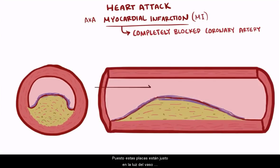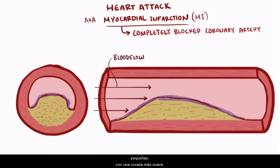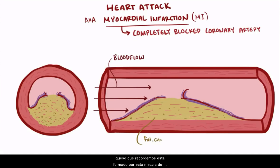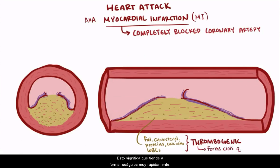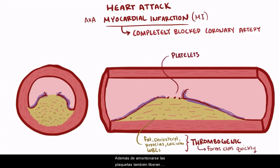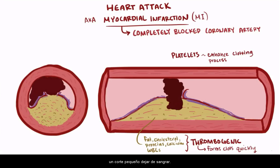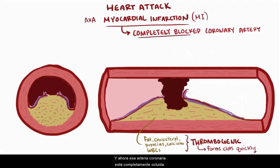Since these plaques sit right in the lumen of the blood vessel, they're constantly being stressed by mechanical forces from blood flow. Interestingly, it's often the smaller plaques with softer caps rather than the larger ones with harder caps that are especially prone to break or get ripped off. Once that happens, the inner cheesy filling — a mix of fat, cholesterol, proteins, calcium, and white blood cells — is thrombogenic, meaning it tends to form clots very quickly. So platelets, or blood clotting components in the blood, flow by and adhere to this exposed material, also releasing chemicals that enhance the clotting process. This happens super fast — think about how quickly a small cut stops bleeding — and now that coronary artery is fully occluded.